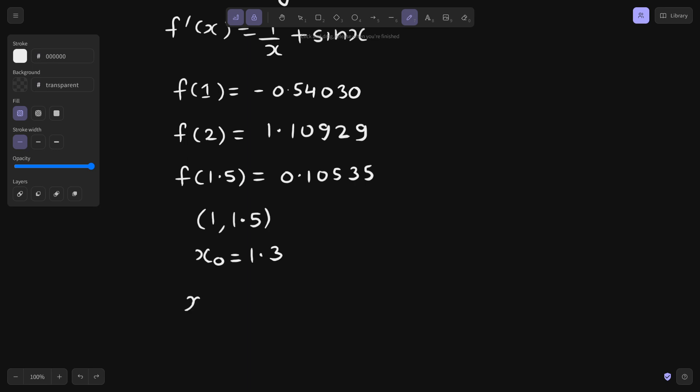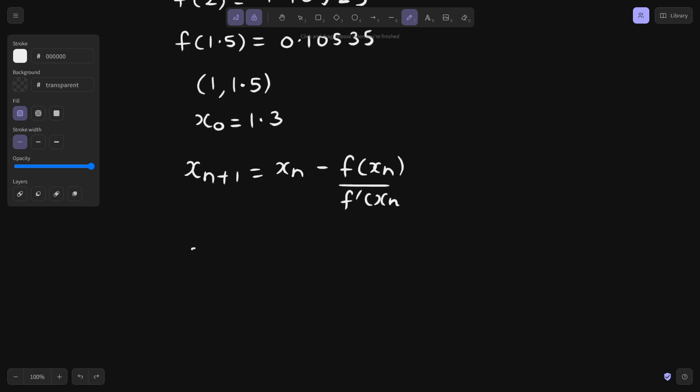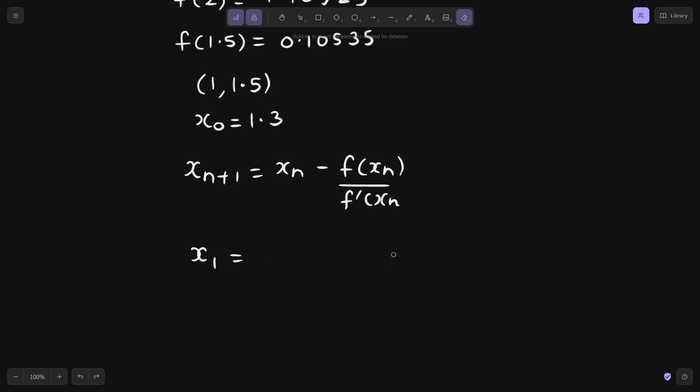What is the iterative formula for Newton-Raphson method? That is x n+1 equals x n minus f of x n divided by f prime of x n. This is the iterative formula. Let's check for the first iteration, for that n equals 0. I'm just putting the value of x0.